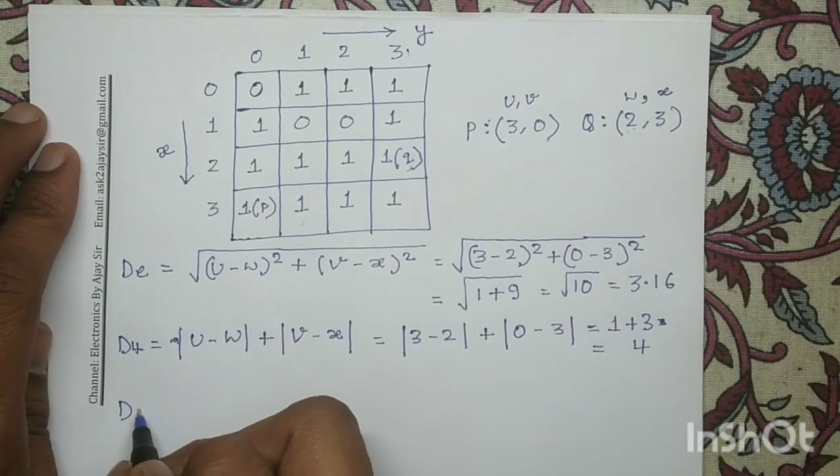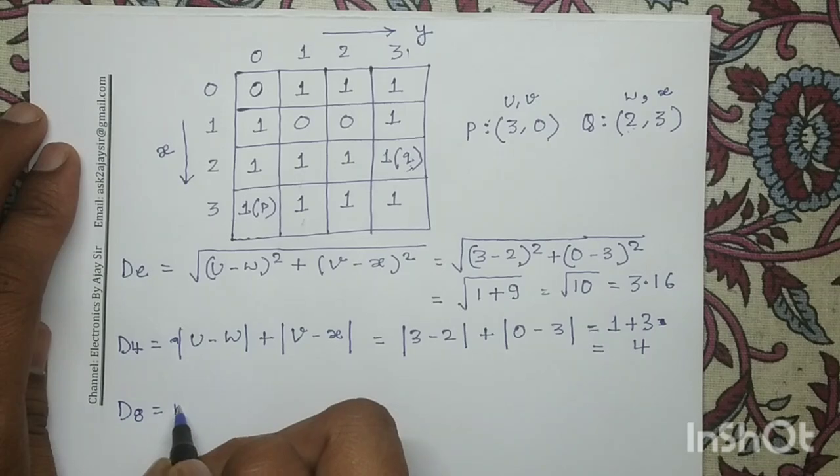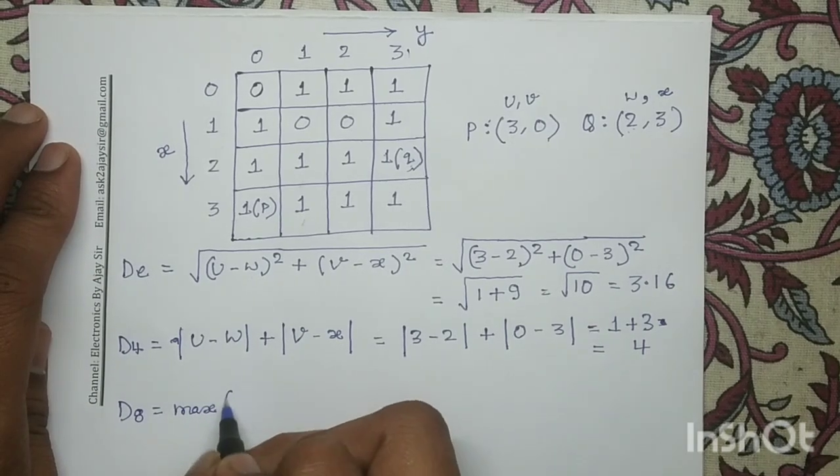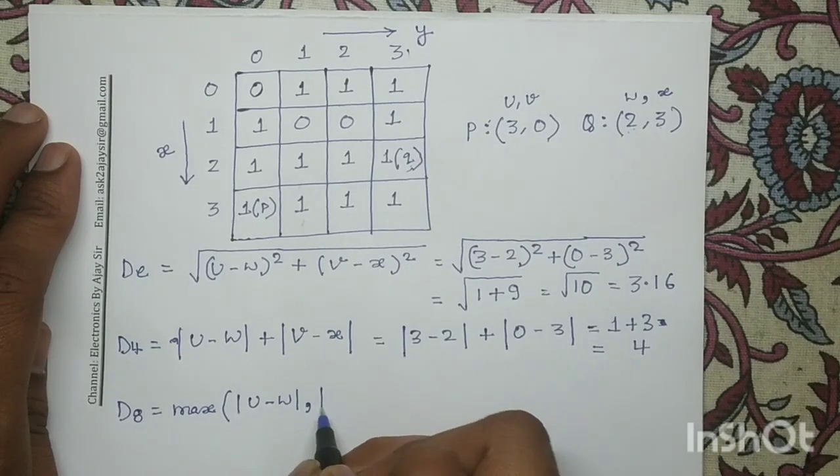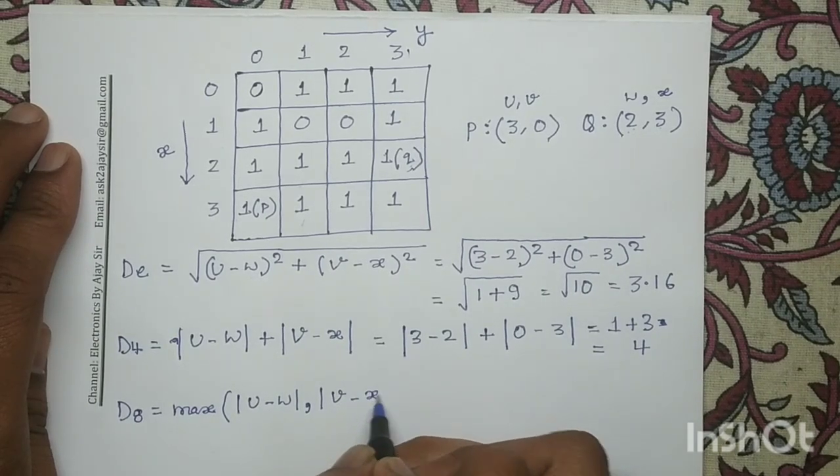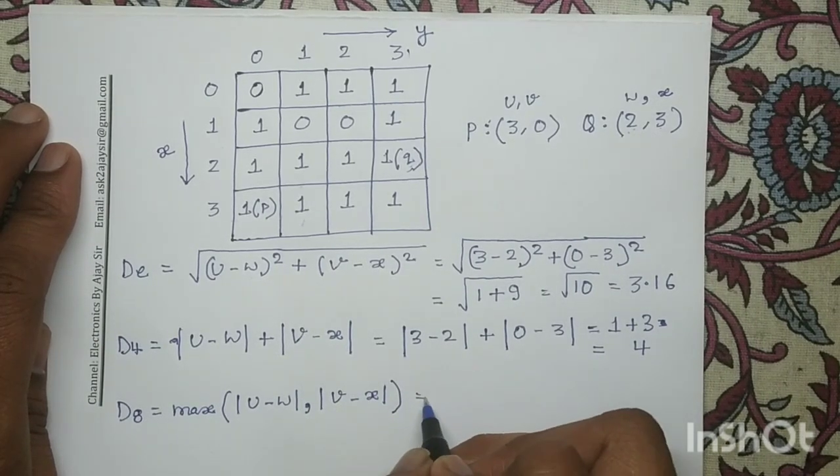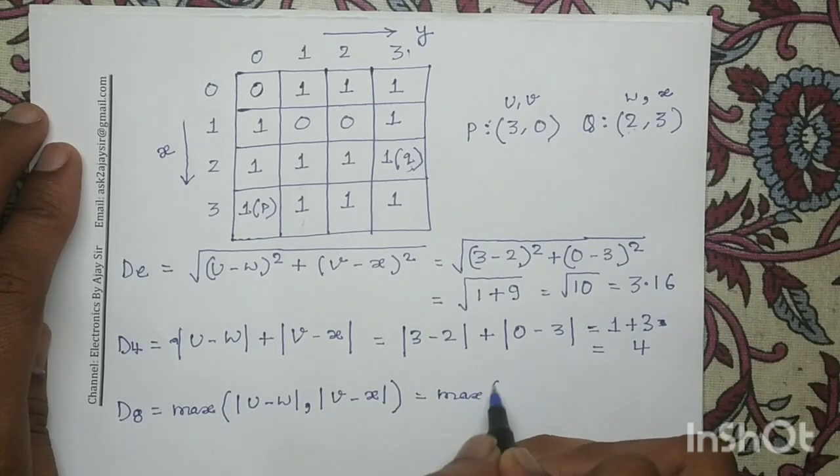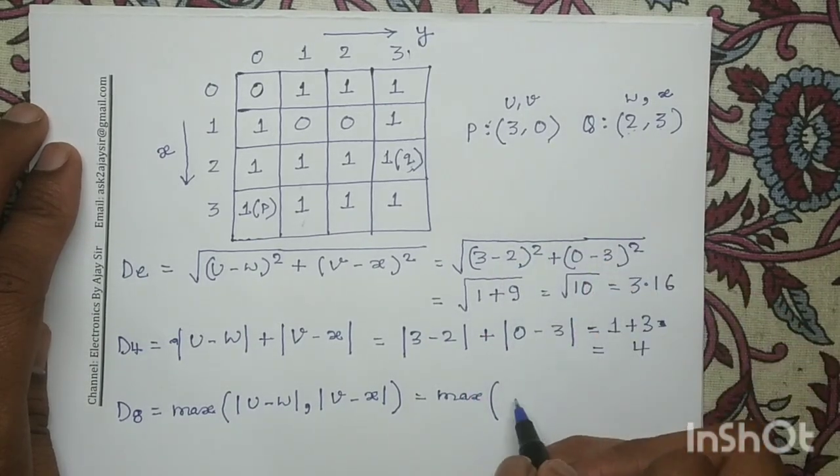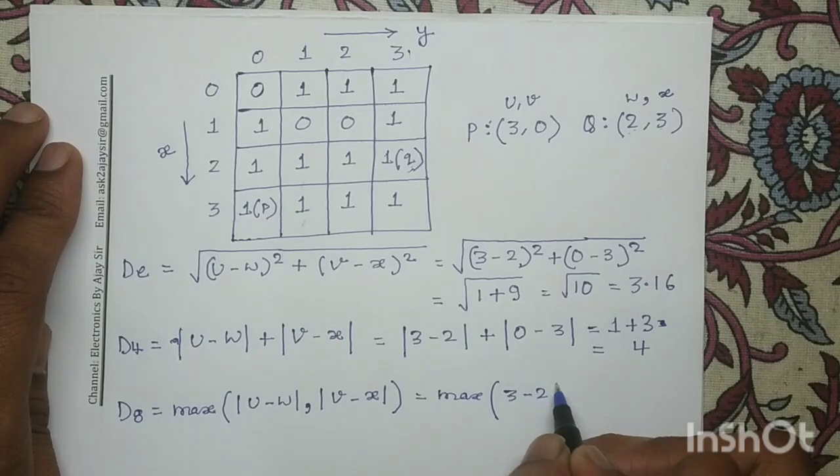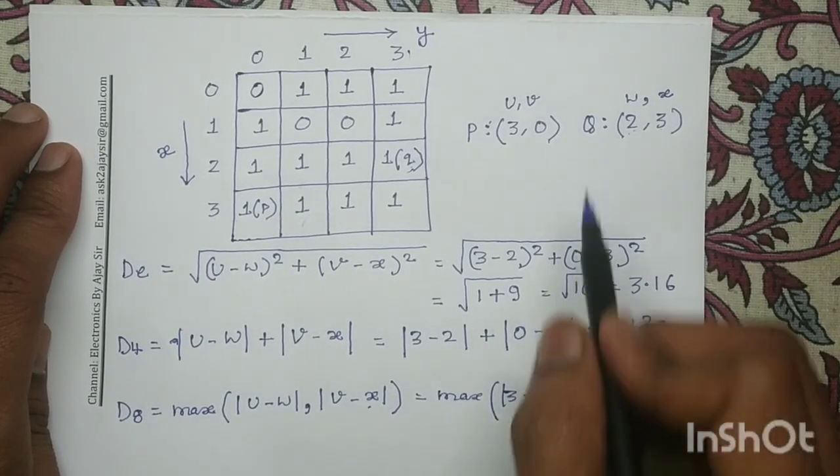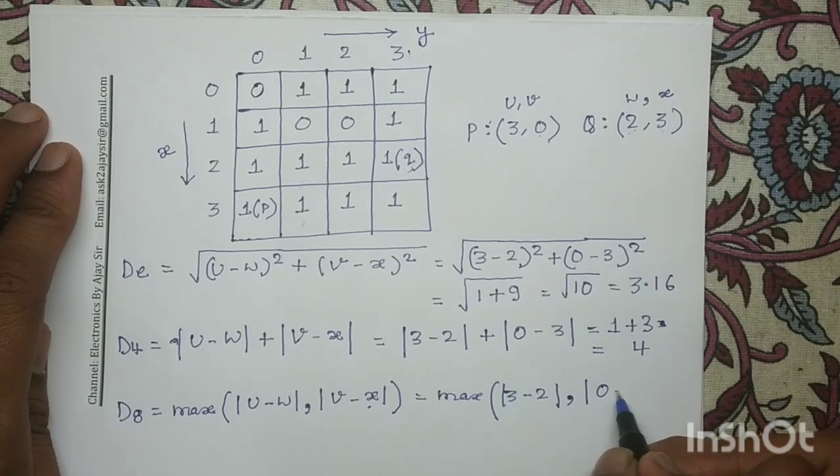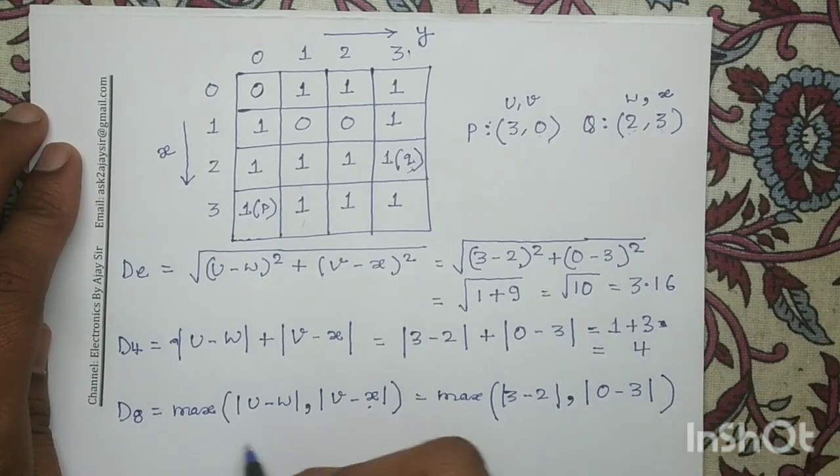Similarly, the D8 distance mathematical equation is maximum of |U minus W|, |V minus X|. So maximum of |3 minus 2|, |0 minus 3| equals